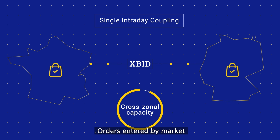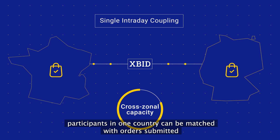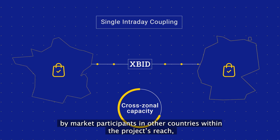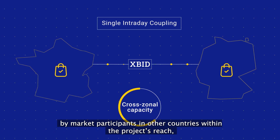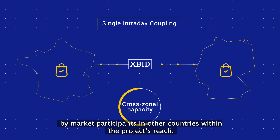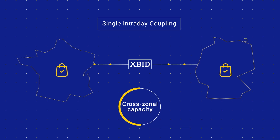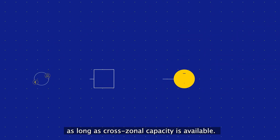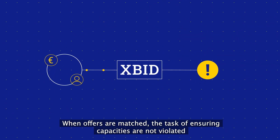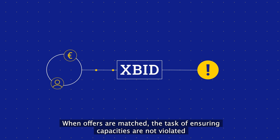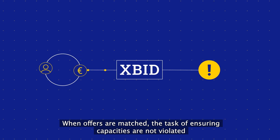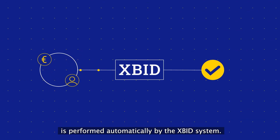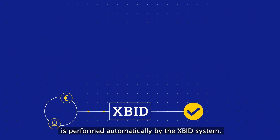Orders entered by market participants in one country can be matched with orders submitted by market participants in other countries within the project's reach, as long as cross-zonal capacity is available. When offers are matched, the task of ensuring capacities are not violated is performed automatically by the ex-bid system.